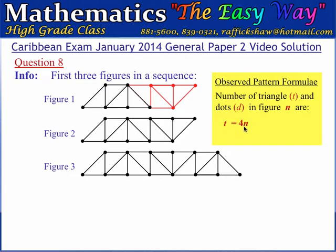Such that when the figure number is 2, there are 8 triangles because 4 times 2 is 8. And when the figure number is 3, there are 12 triangles because 4 times 3 is 12.